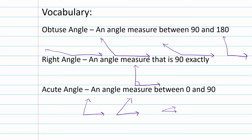Visually you have to pay attention: obtuse is between 90 and 180, right is exactly 90, and acute is anything between 0 and 90. Go ahead and write those degree symbols in your notes — we have obtuse, right, and acute.